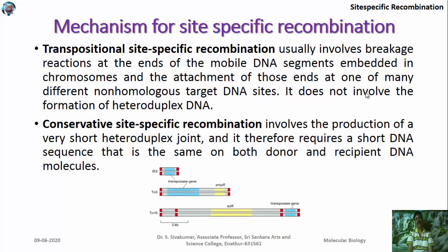There are two major mechanisms proposed to explain site-specific recombination. One is known as transpositional site-specific recombination, which usually involves breakage reactions at the ends of the mobile DNA sequence embedded in chromosomes and attachment of those ends at non-homologous target DNA sites. It does not involve the formation of heteroduplex DNA. During this transpositional site-specific recombination, there is no involvement of heteroduplex combinations.